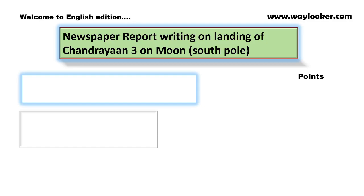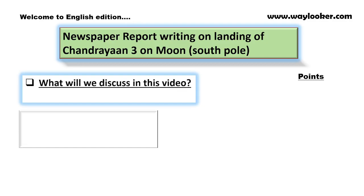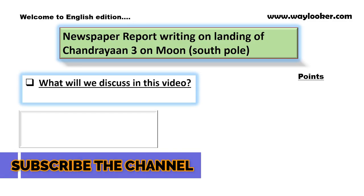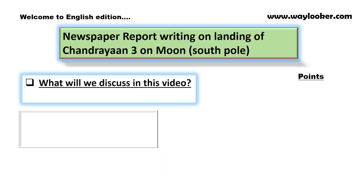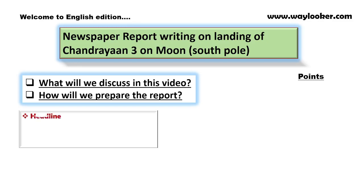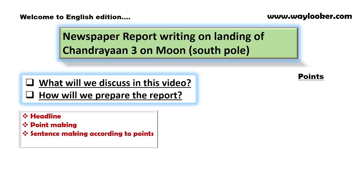This is the topic of the upcoming examination, which is very important for newspaper report writing on the landing of Chandrayaan-3 on the moon's south pole. In this video, we will discuss how to prepare the report. First, we will prepare the headline. Then we will prepare the points, and make sentences according to the points. Finally, we will prepare the complete report.